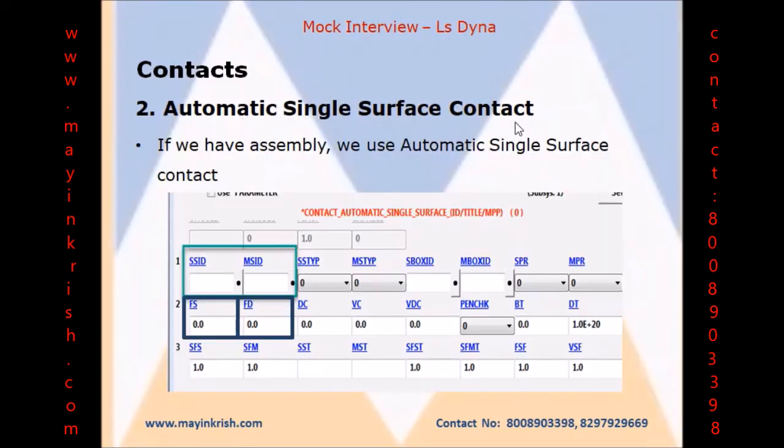Coming to Automatic Single Surface Contact, it is a most common contact used in impact simulations. SSC always considers shell thickness offsets. Only Slave side has to be defined.